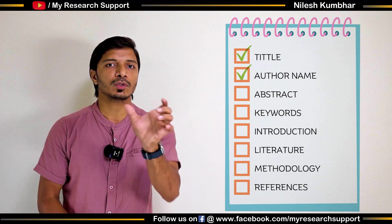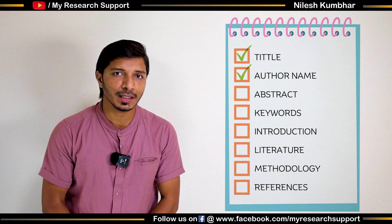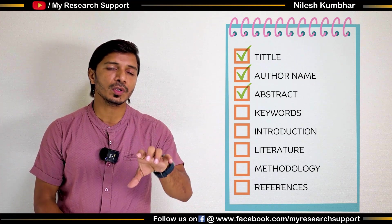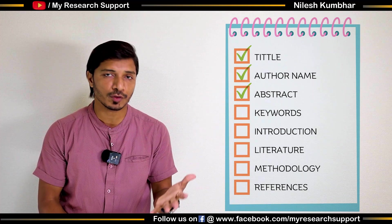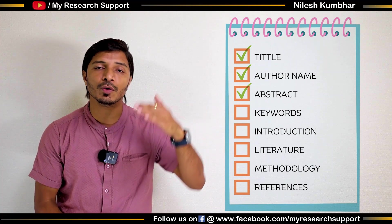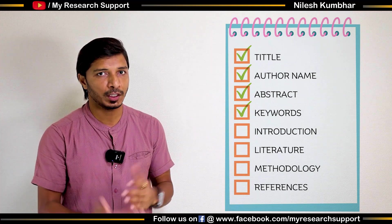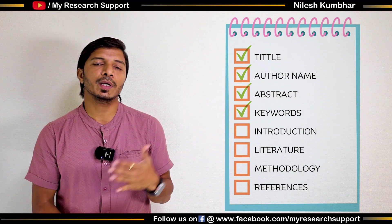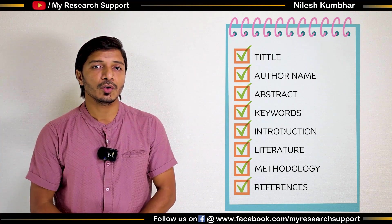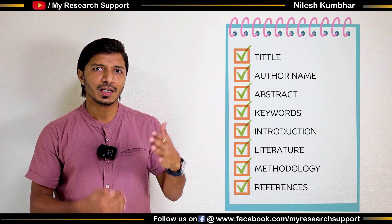Check whether they specify a word limit for the title. Most of the time, when writing author names, do not write Doctor, Professor, or Mister. For the abstract, most journals have a word limit — please stick to that. Then for keywords, they may specify five or seven keywords. After that, move towards your introduction, literature, and references.